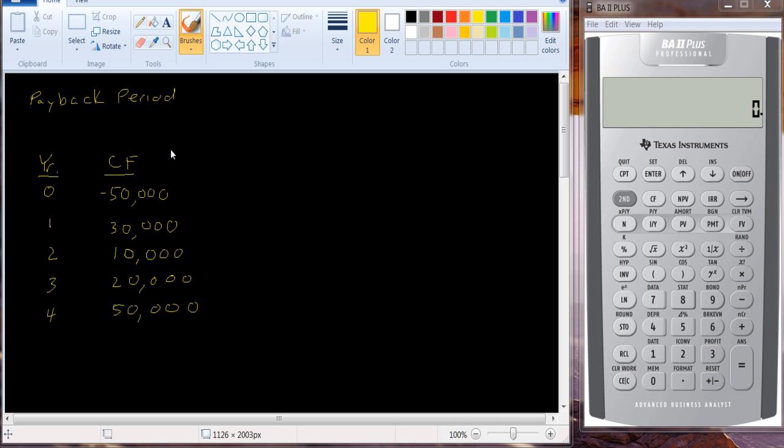Of all the different capital budgeting techniques, the payback period is by far the easiest to compute and it's actually quite intuitive. The payback period looks at the amount of time that's required to generate enough cash flow to pay for the initial cost of the investment.